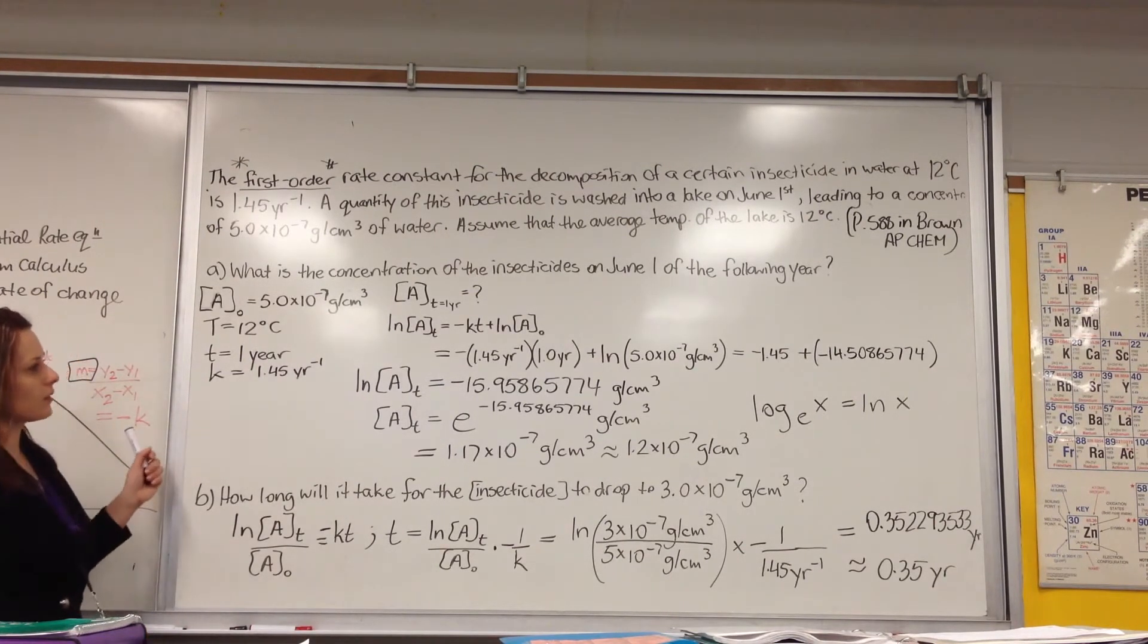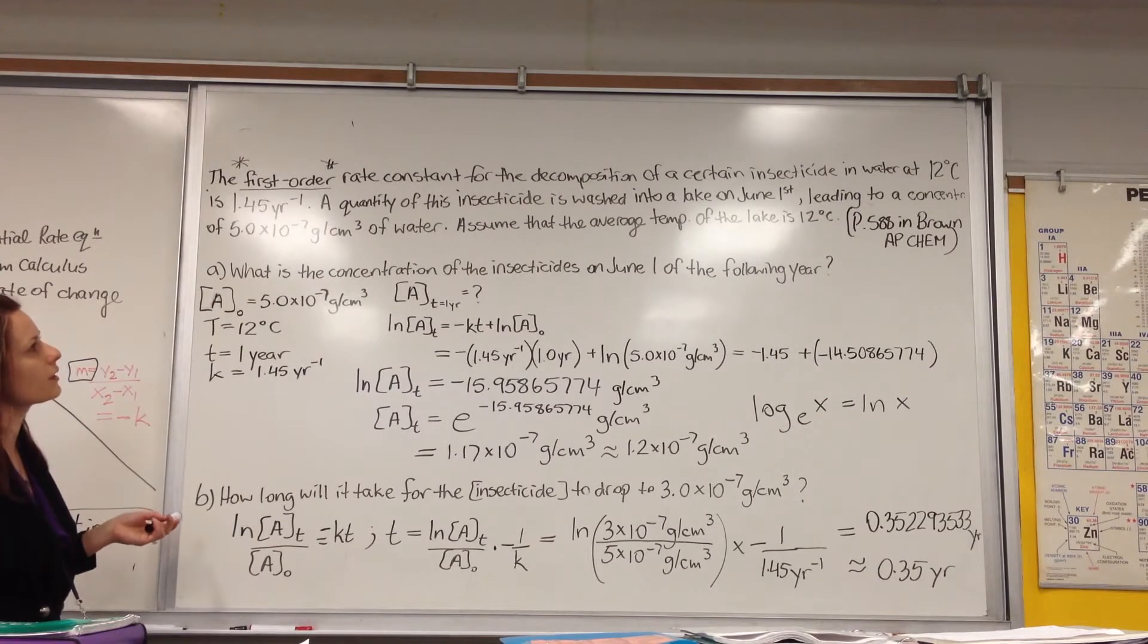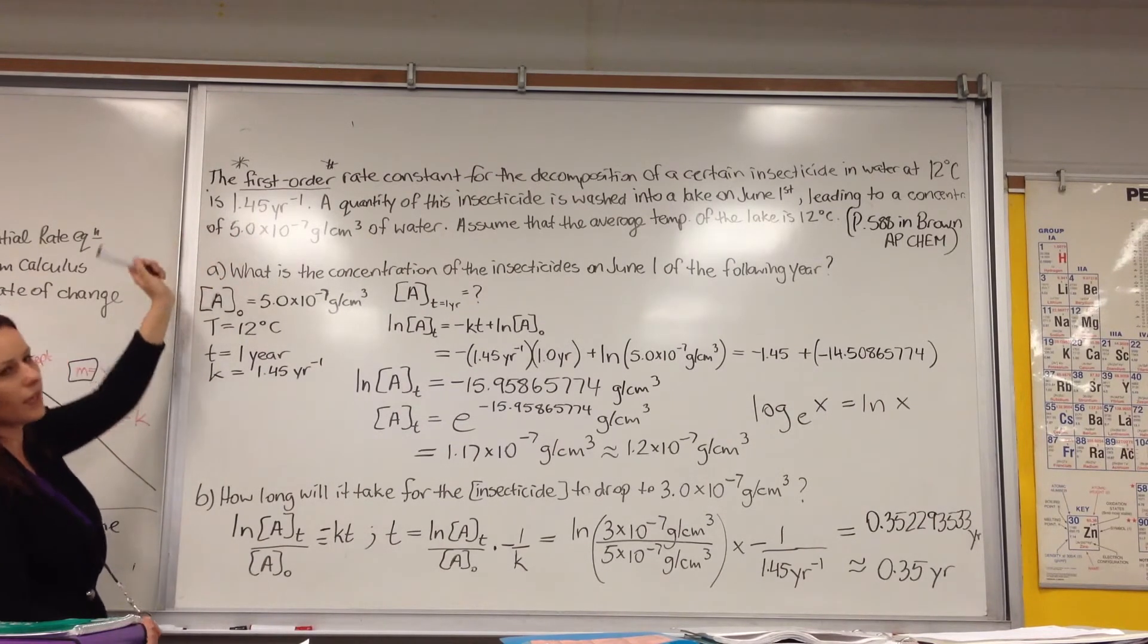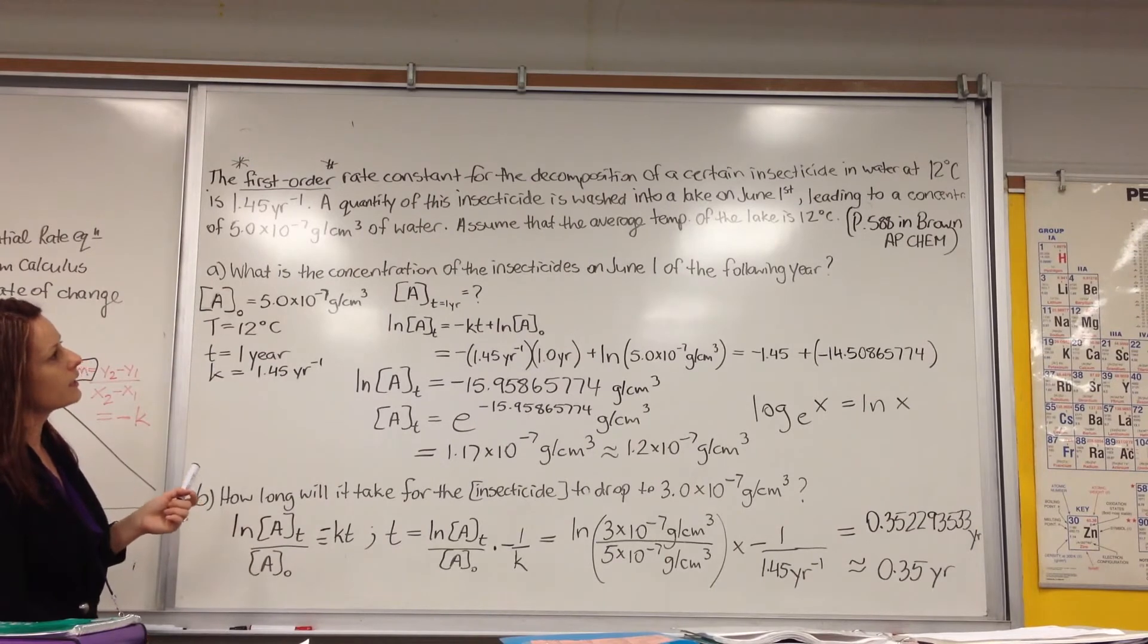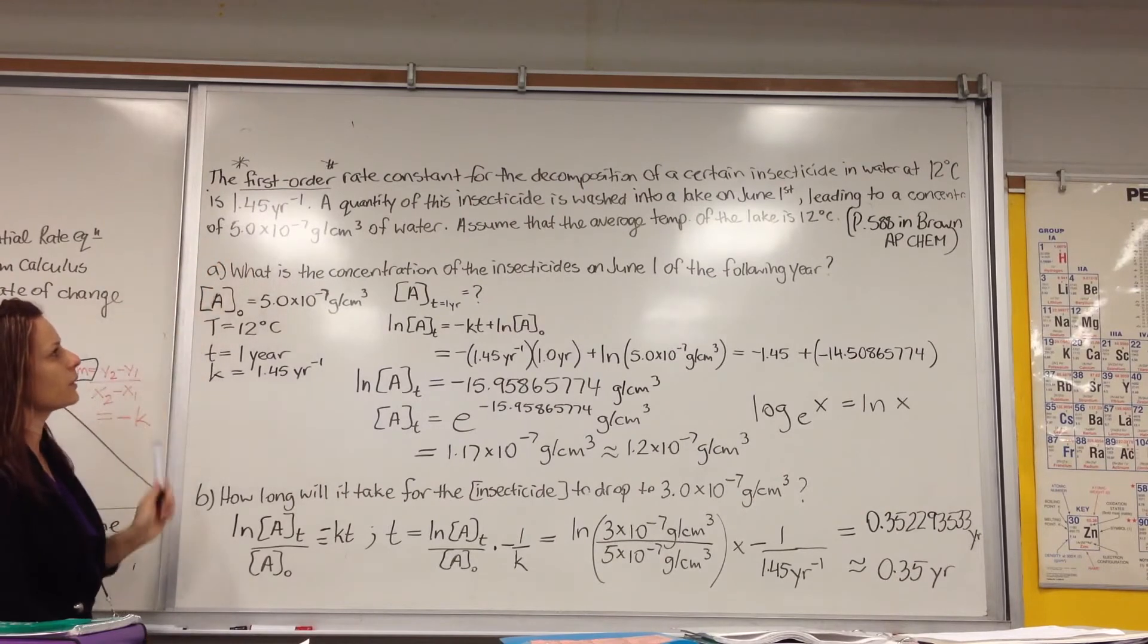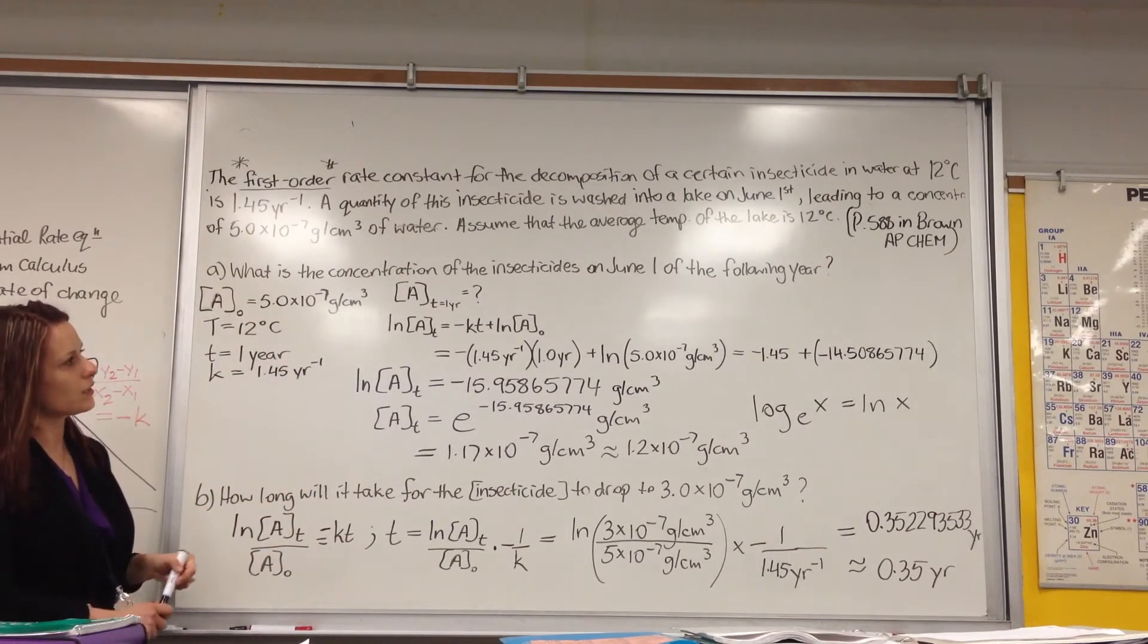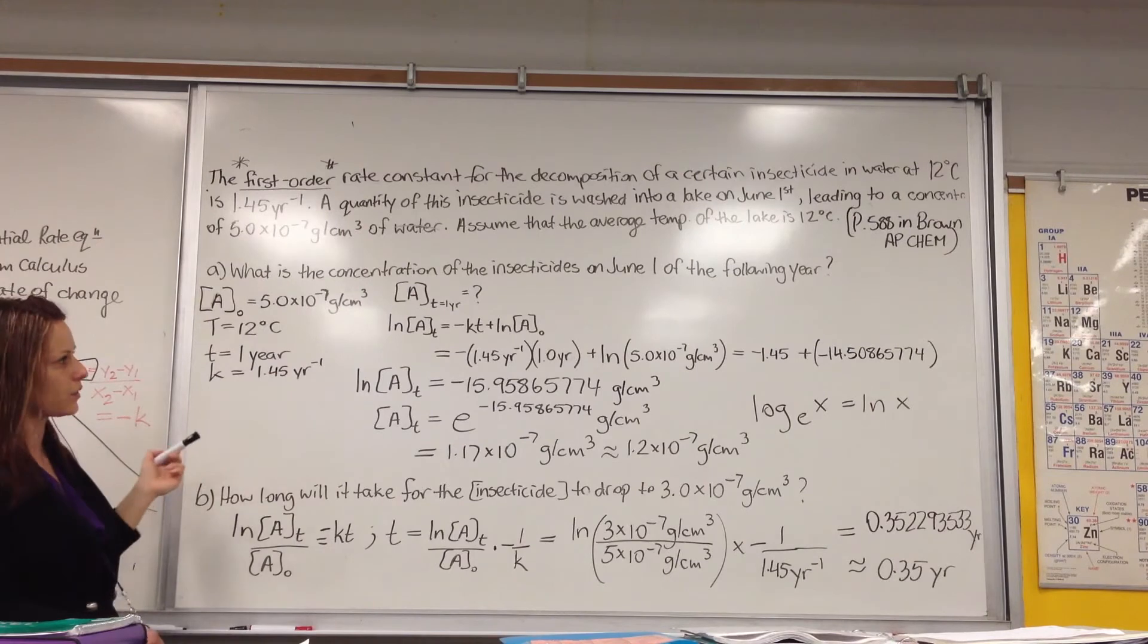This word problem allows us to use the first order integrated rate equation. So the question is, the first order rate constant for the decomposition of a certain insecticide in water at 12 degrees Celsius is 1.45 per year. Year to the negative one means per year. A quantity of this insecticide is washed into a lake on June 1st, leading to a concentration of 5.0 times 10 to the negative 7 grams per centimeter cubed. Actually, this should be of insecticide, not of water. Assume that the average temperature of the lake is 12 degrees Celsius, and this question we actually took from page 588 in the Brown AP Chemistry textbook.